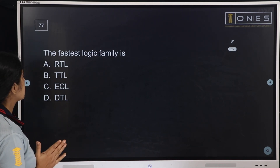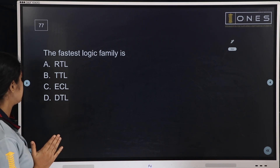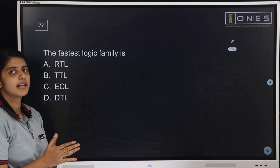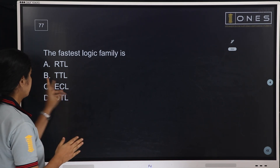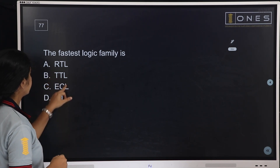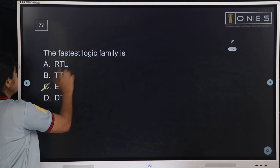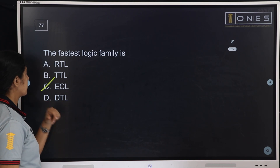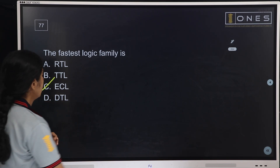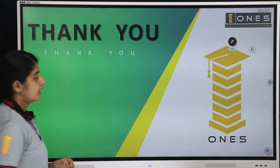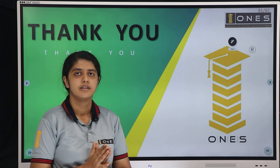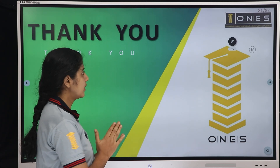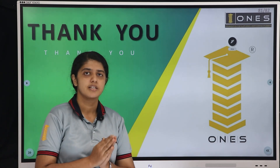Next question: The fastest logic family is? Options: RTL, TTL, ECL, DTL. ECL — Emitter Coupled Logic — is the answer. ECL is the fastest logic family. This is a repeated question in technical exams. These are the KACB 2013 Sub-Engineer questions being discussed here.